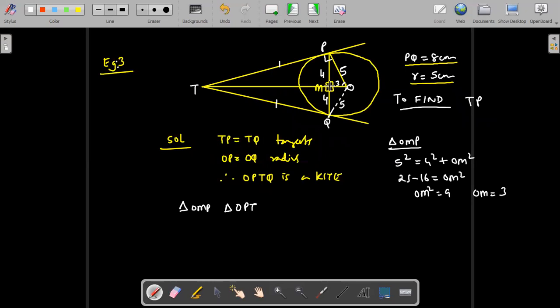So if I take OMP and OPT what is going to happen? You see this angle O is common for OMP as well as OPT. Angle O is common for both. And angle OMP is 90 because just now we said that it's a kite and diagonals intersect at 90. And OPT is also 90 because we know that angle between radius and tangent is 90.